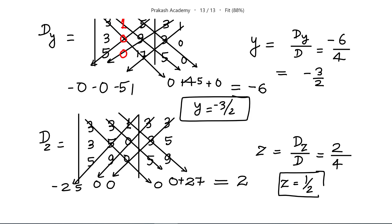Using Cramer's rule and matrices, along with the shortcut trick, we solved this problem and found the values of x, y, and z. I hope you enjoyed this video. If you enjoyed it, please like, share, and subscribe to my channel. I will see you in the next video. Thank you.